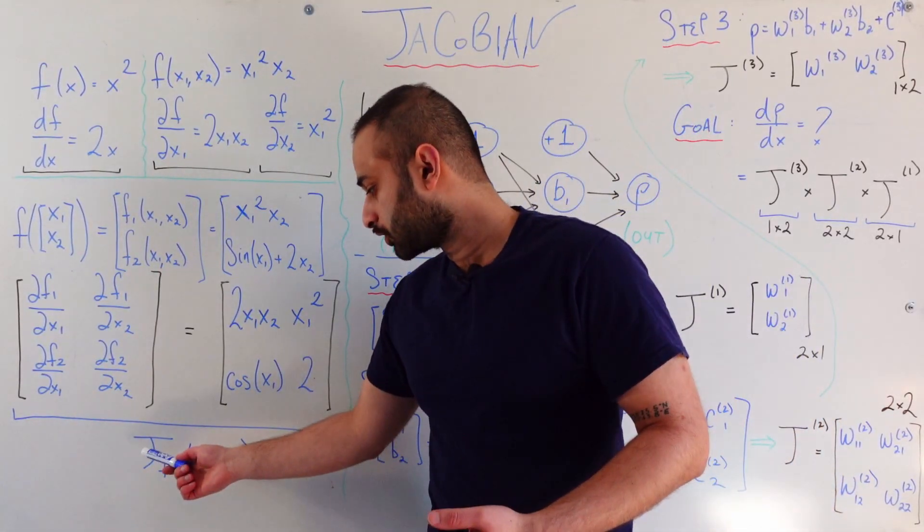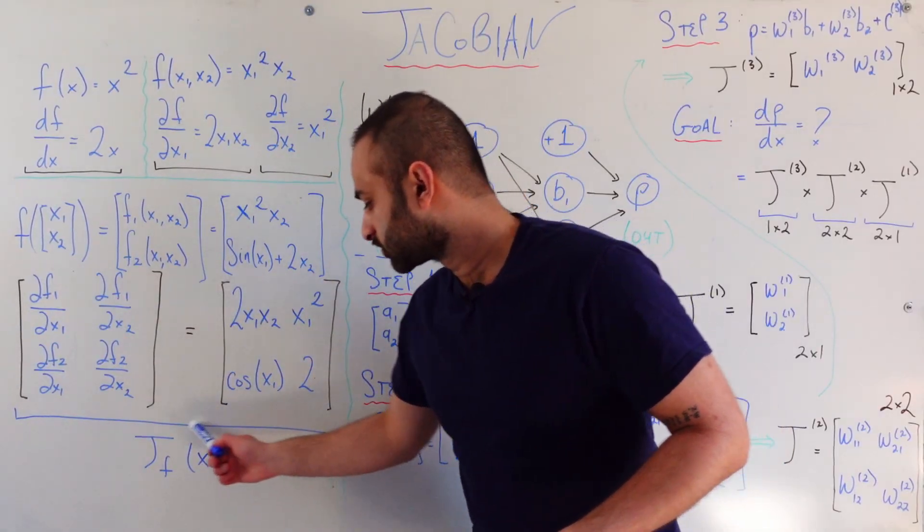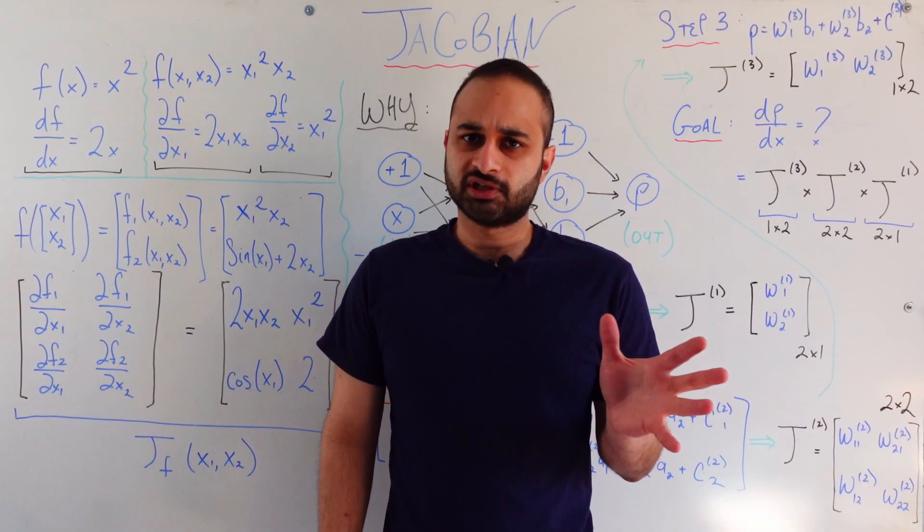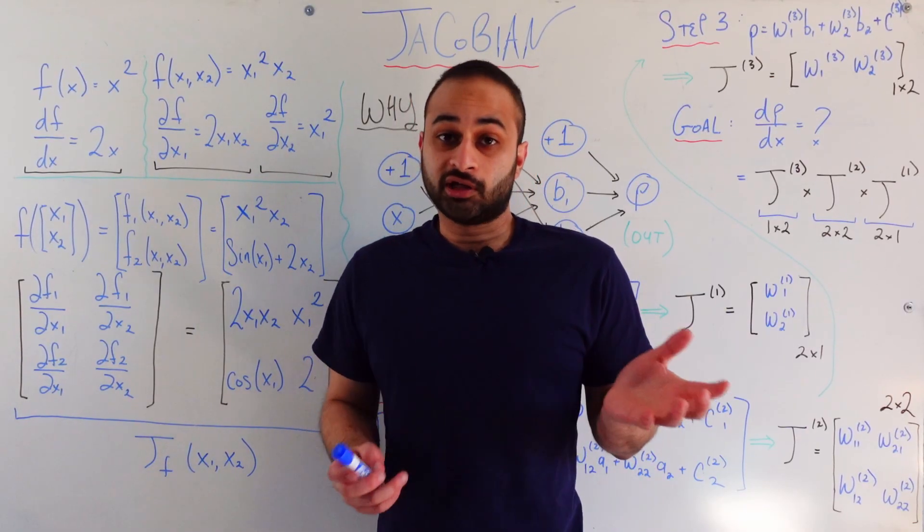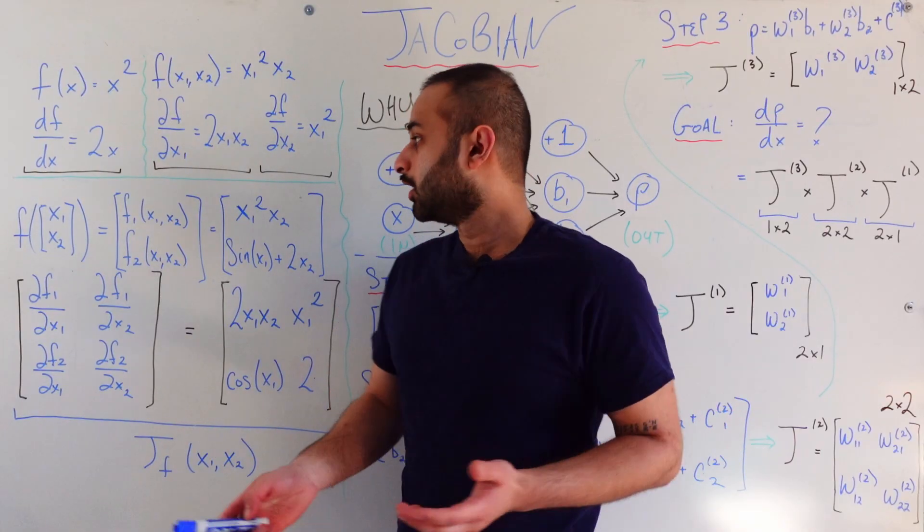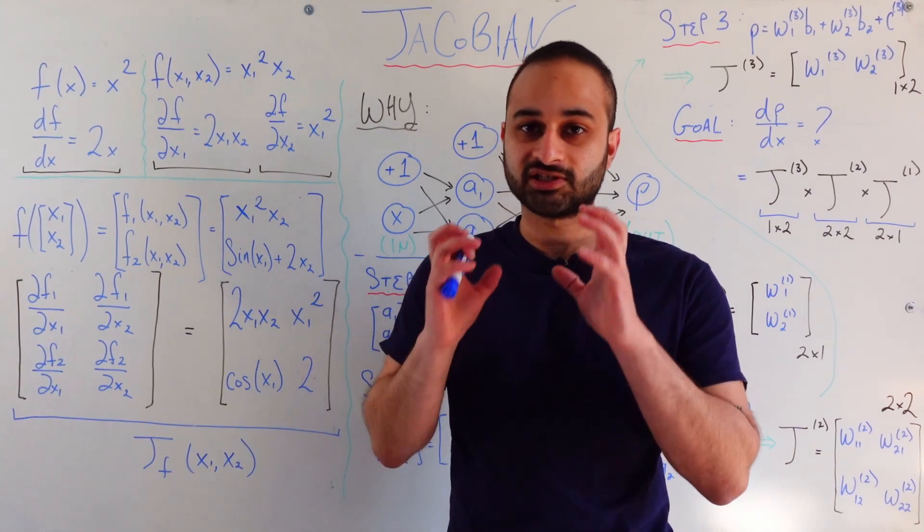So our notation is J for Jacobian, we subscript the name of the function which is F and we explicitly put in all the variables that were used here, x1 and x2. So you'll see different notations for this guy, but the Jacobian in a nutshell is just taking all possible derivative combinations based on how many functions you have and how many variables you have and collects it into this nice neat matrix.